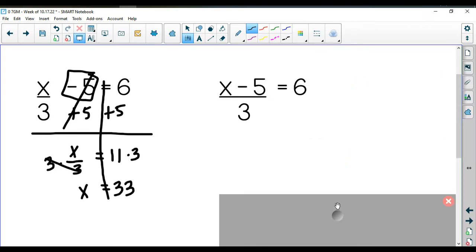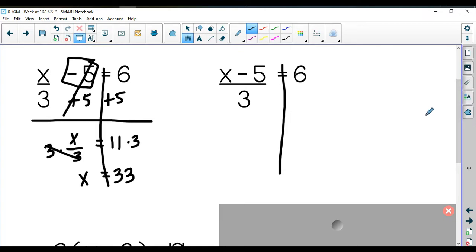Second one I'm going to ask you to write down is this one. You have x minus 5 all divided by 3 is equal to 6. Write it down, drop a line down your equal sign and solve this one. Again, you'll pick the answer that matches yours.